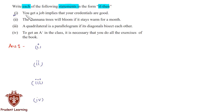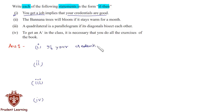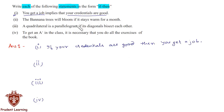The given statement is: 'You get a job implies that your credentials are good.' We can rewrite this sentence as: 'If your credentials are good, then you get a job.' If you can identify the two statements then you can very easily write the answer. So let's move on to the next section.